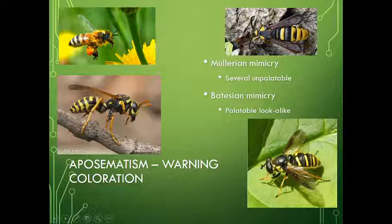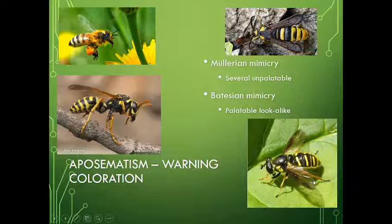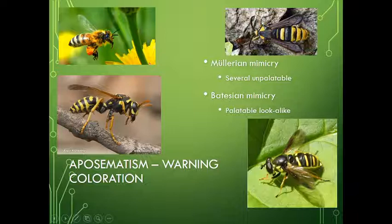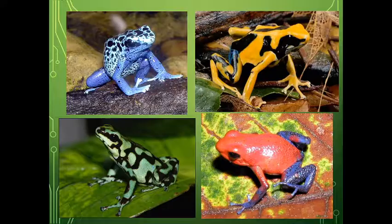Now the hoverfly is using Batesian mimicry, which is a little different. That organism is actually fine — it's not dangerous at all. It's a fly; you can see it only has two wings, more closely related to a housefly. It's not in the Hymenoptera — the wasp and bee order. But they're yellow and black, and people and other animals leave them alone because they think they're going to get stung, when really they're just harmless little flies.